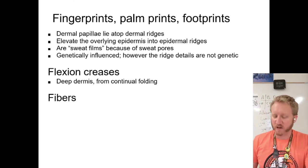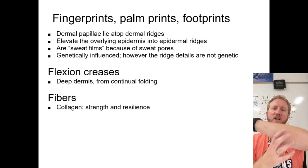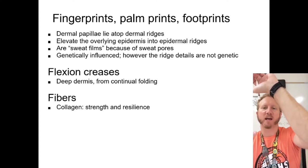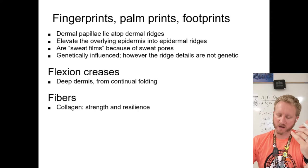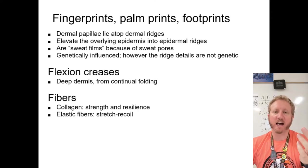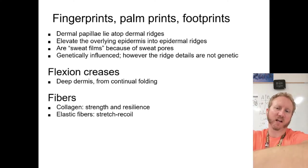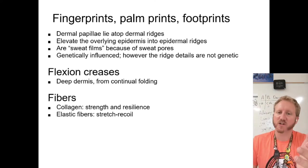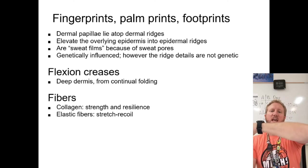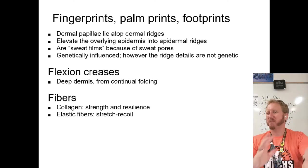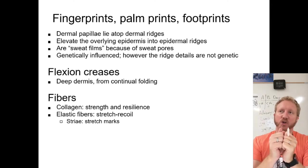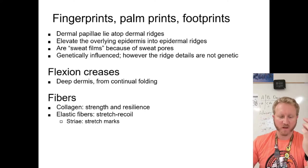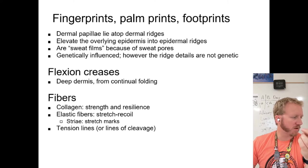Collagen fibers provide strength and resilience — when you press skin it springs back. As collagen breaks down, skin becomes saggy and wrinkles form, which is why people try collagen treatments. Elastic fibers allow stretch and recoil. Without them, skin can hang and stay stretched — a condition characterized by elastic fiber breakdown. Overstretching creates stretch marks, called striae.